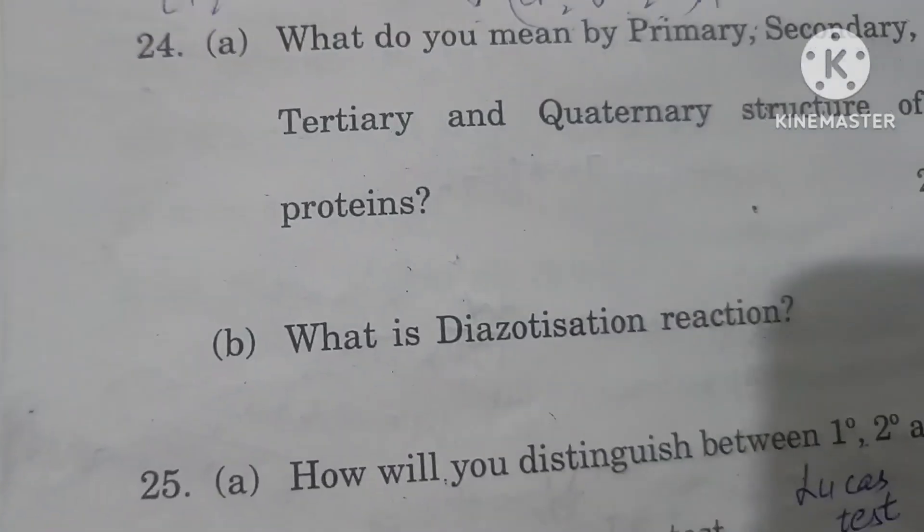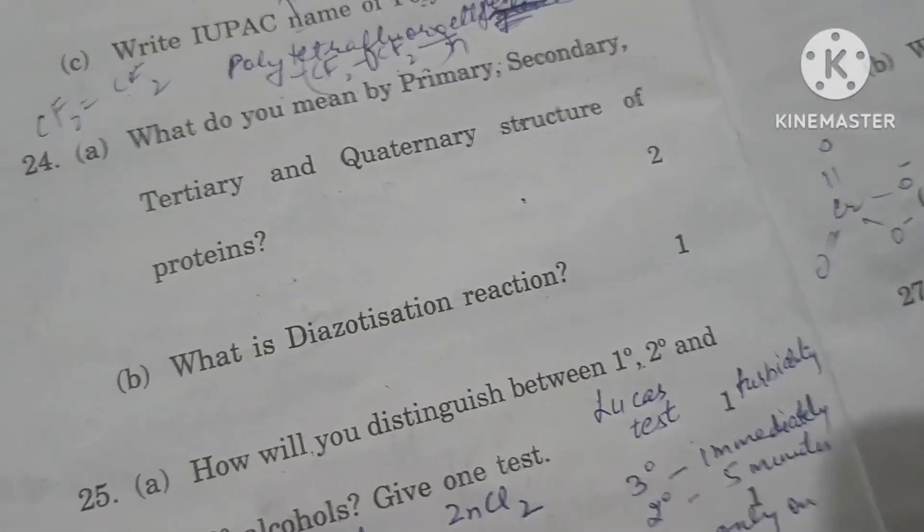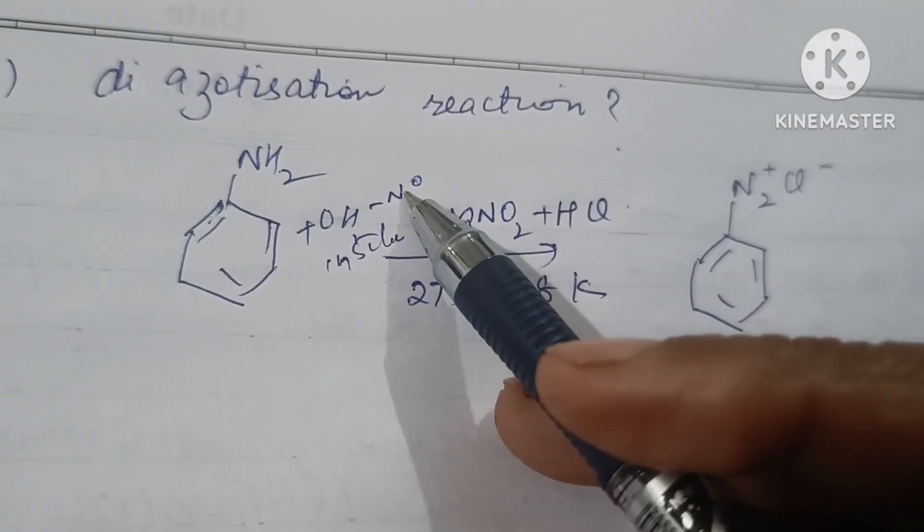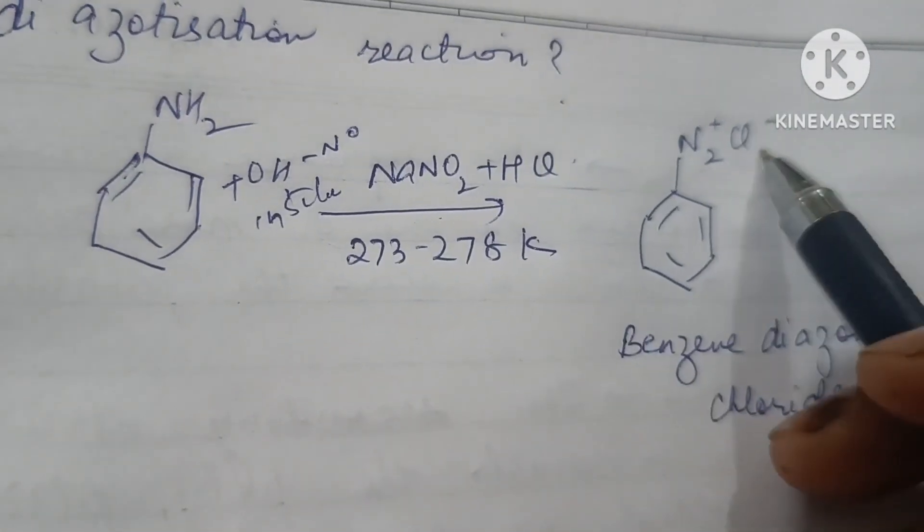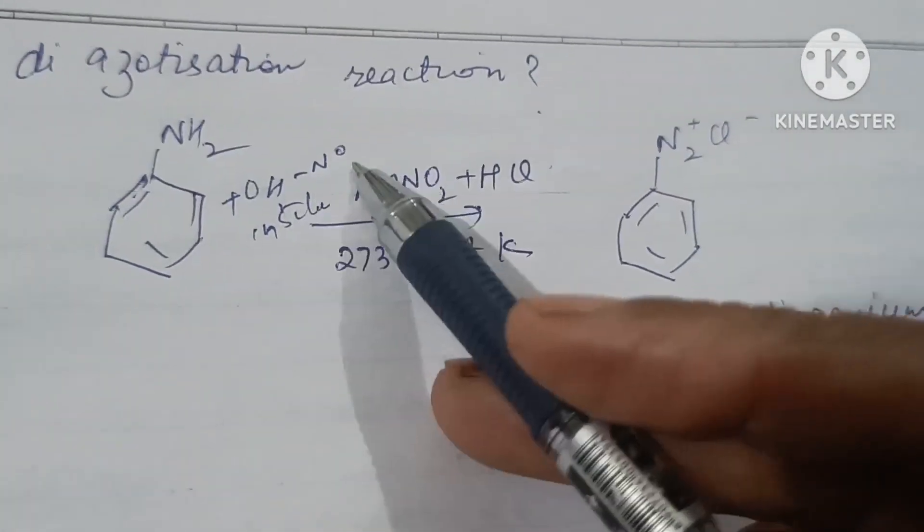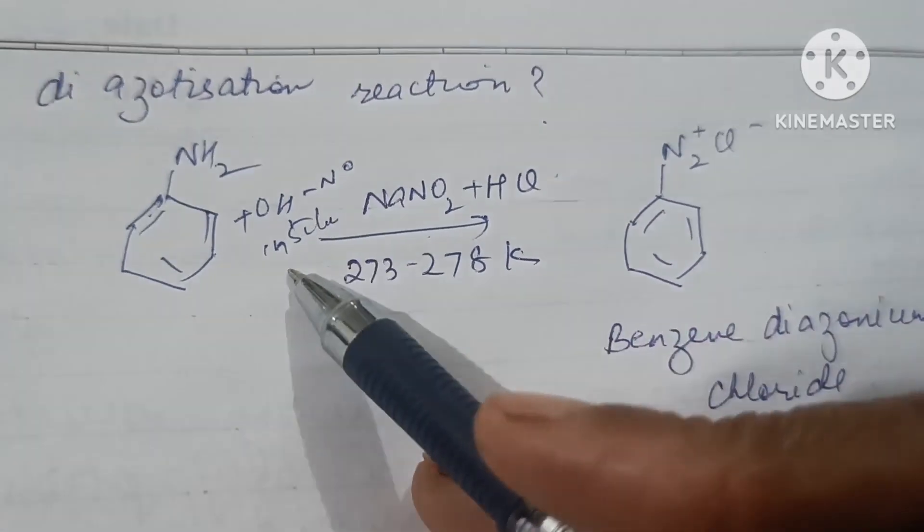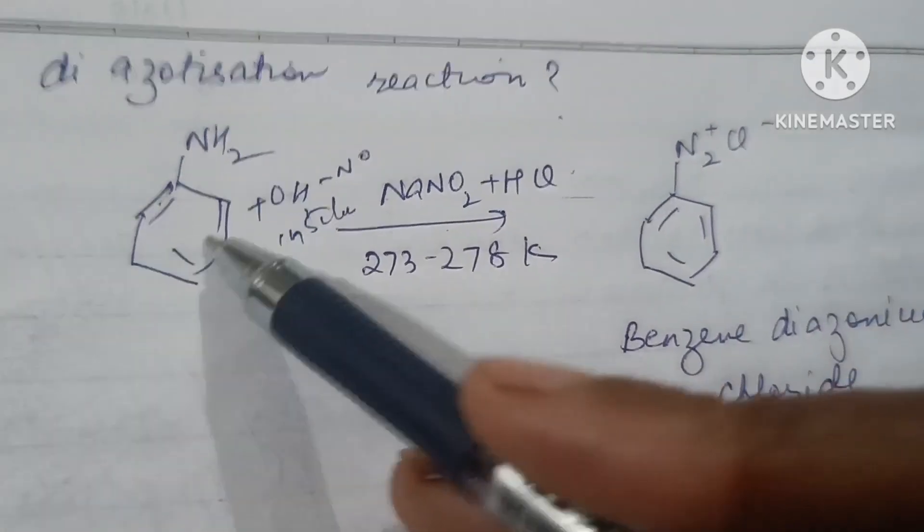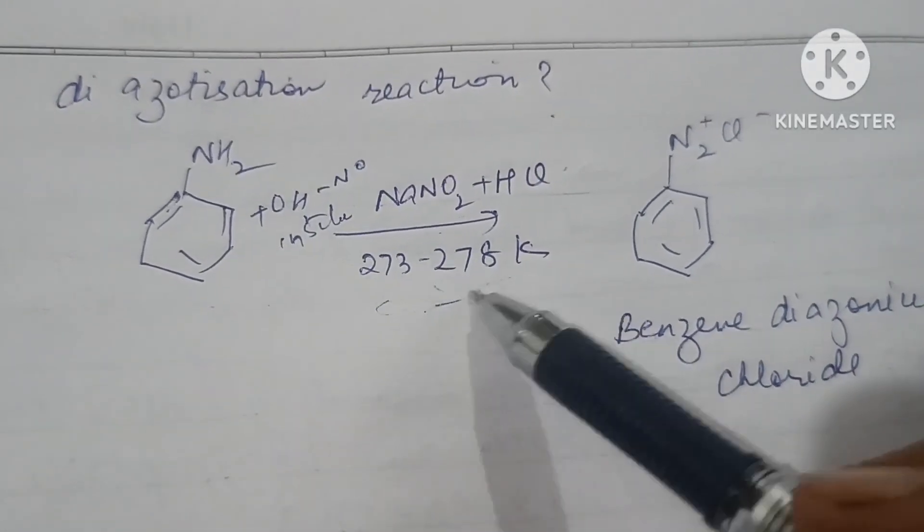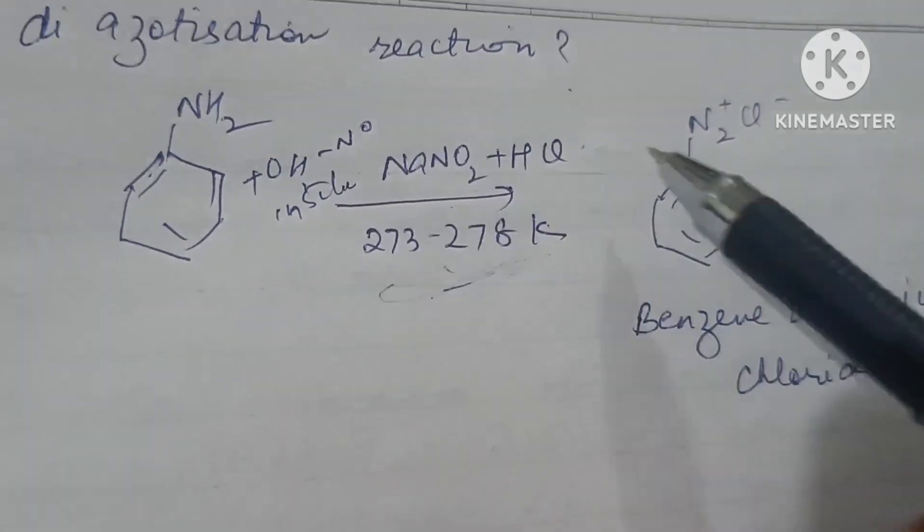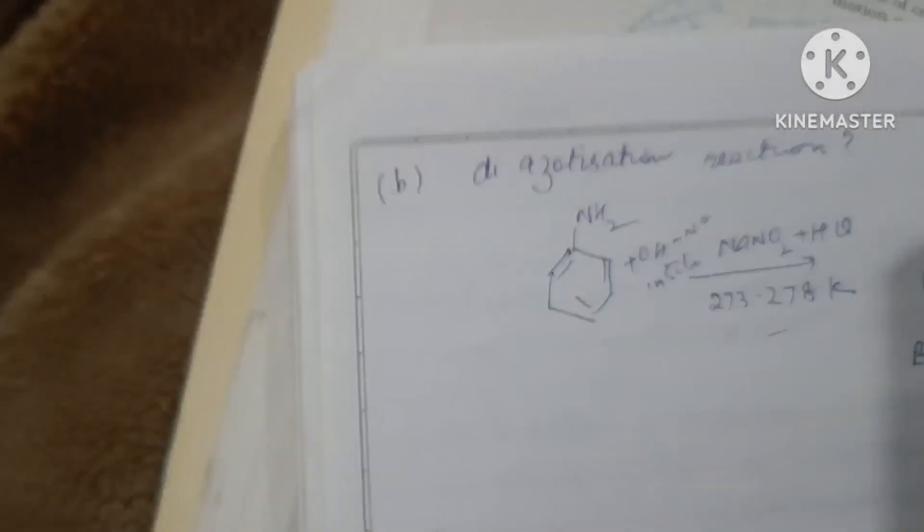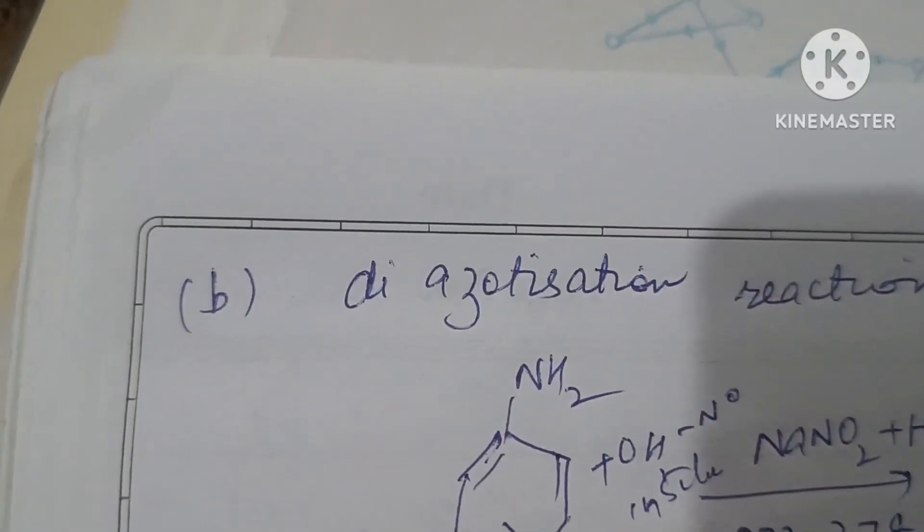What is diazotization reaction? When we react benzene with nitrous acid, benzene diazonium chloride is formed. This nitrous acid we prepare in situ by reaction between NaNO2 and HCl at ice cold conditions, 273 to 278 kelvin. They combine to form diazonium chloride. This process is called diazotization.